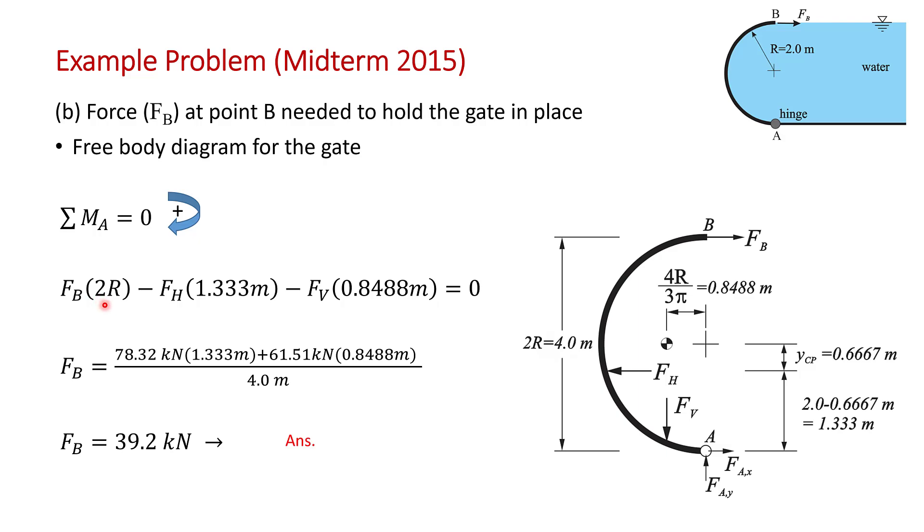Recognizing that the moment arm for B is 4 meters. And you get an answer of 39.2 kilonewtons. I always recommend rounding final answers to about three digits. And that completes this problem.